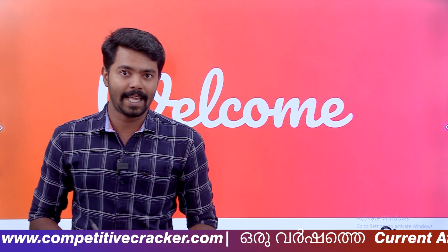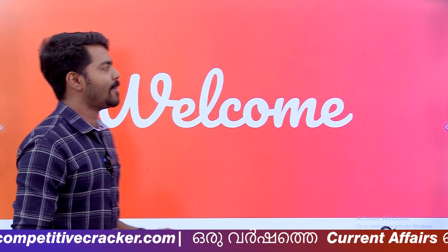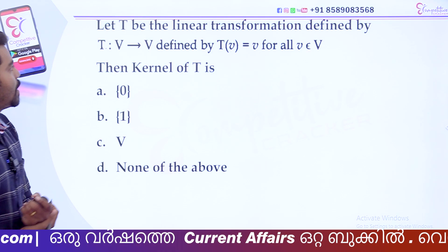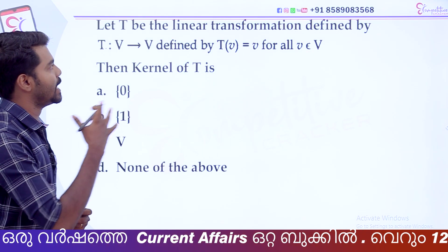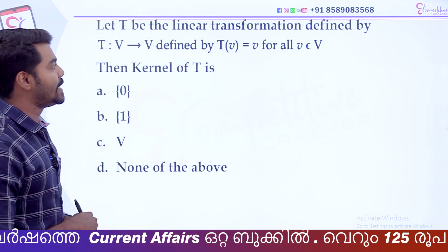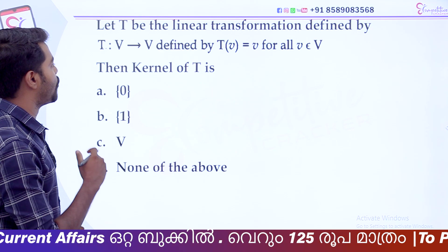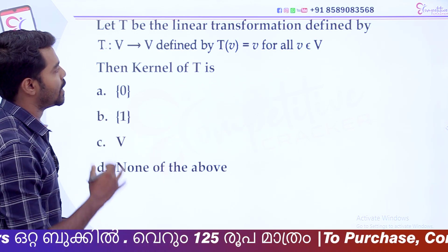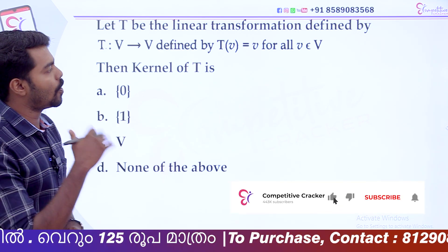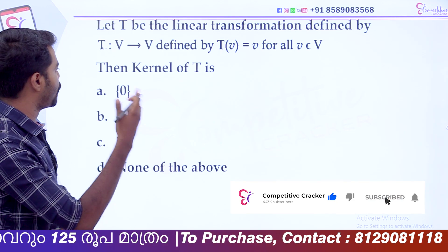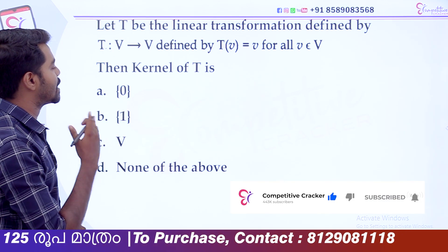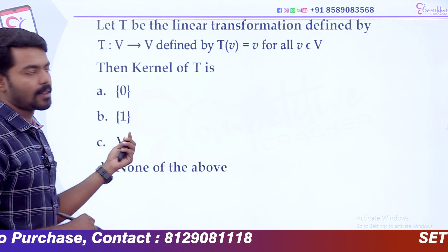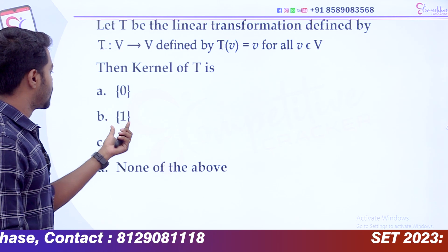We start our class here. Let t be the linear transformation defined by t from V to V, defined by t of v equal to v, for all v elements of V. Then the kernel of T is: singleton set {0}, set {1}, V, or none of the above.